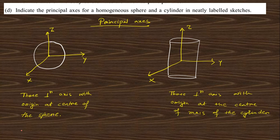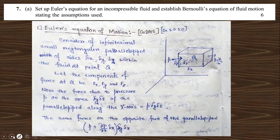Question 6d: Indicate the principal axes for a homogeneous sphere and cylinder with a level sketch. For a sphere, the three mutually perpendicular axes through the center of mass are the principal axes. For a cylinder, similarly, the axis of symmetry and two perpendicular axes through the center of gravity serve as the three principal axes.